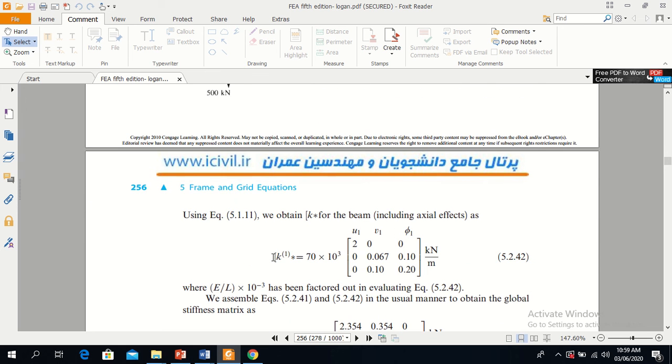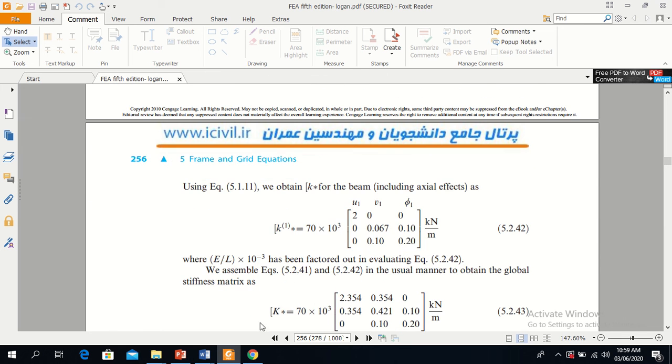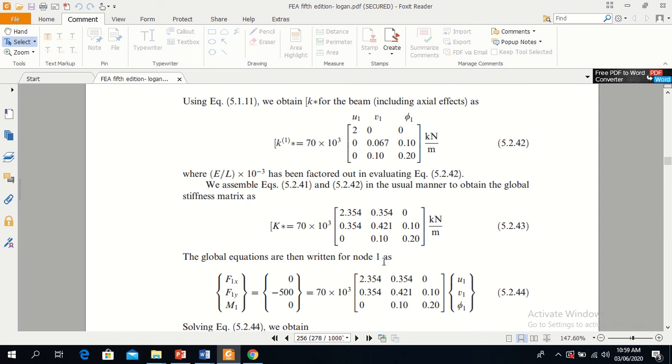Then we will add K1 and K2 to find the global stiffness matrix, and we will use F equals KX. This is the K matrix, this is the X displacement matrix. The force acting at node 1 is only a downward force, so it has only a Y component in the negative Y direction. X force is 0 and moment is also 0. You can easily solve this matrix and find u1, v1, and phi1.